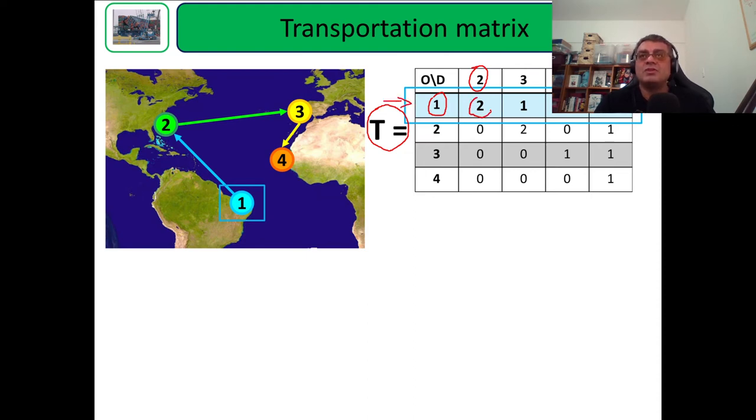how many containers with origin port one will be loaded. Two containers with destination port two will be loaded in port one, one container with destination port three will be loaded in port one, and at least the last container, one container with destination port four, will be loaded in port one.